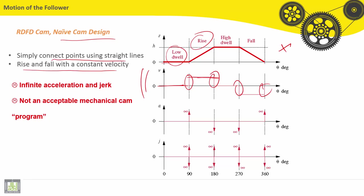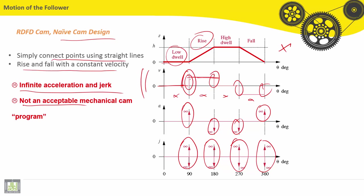Velocity is constant for all phases. In this region, it includes infinite acceleration and also infinite jerk. This design with infinite acceleration and jerk is not acceptable. It is not an acceptable mechanical cam program.